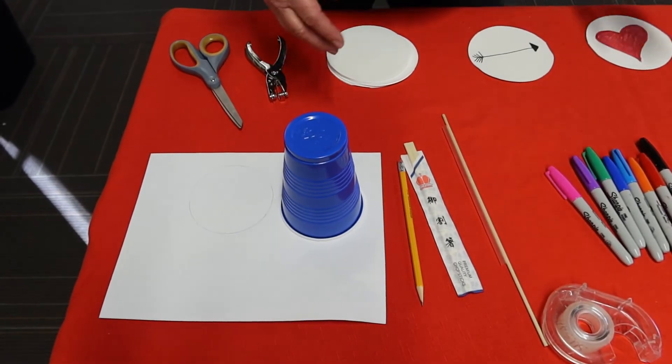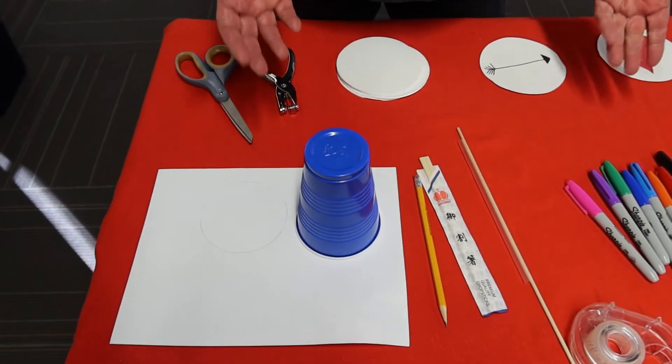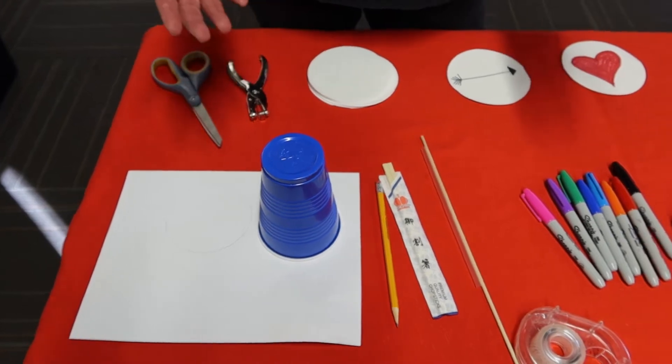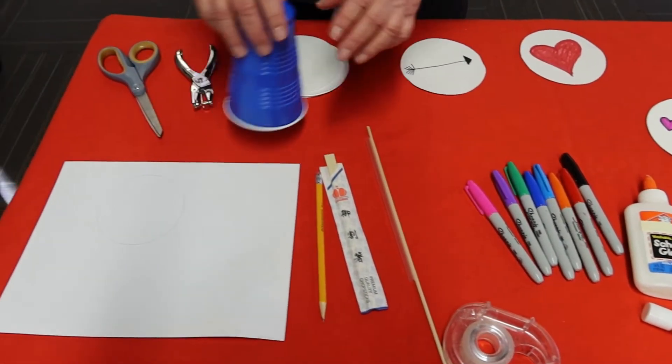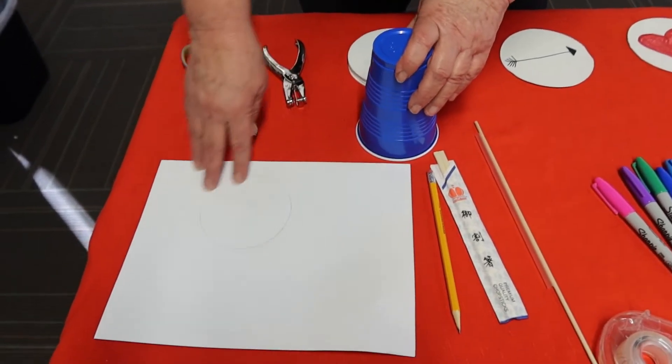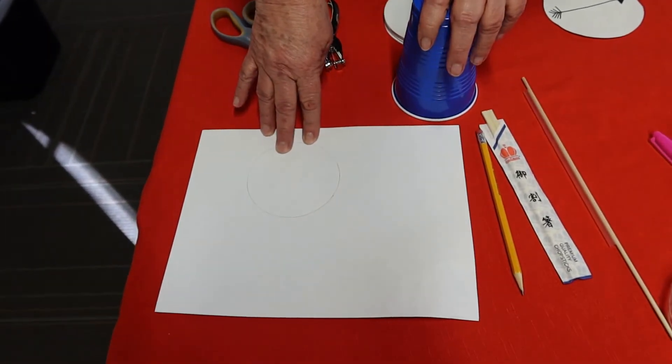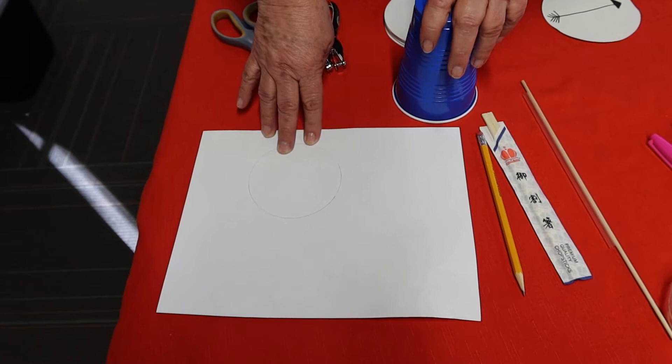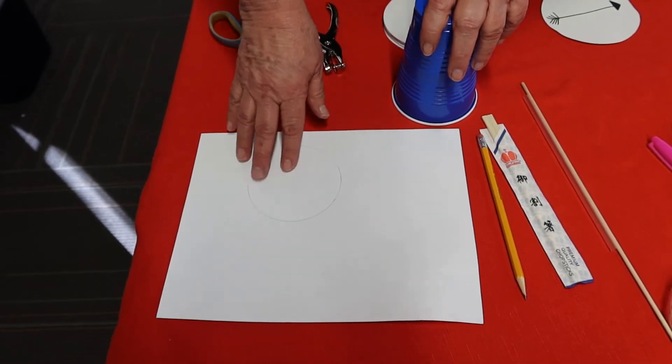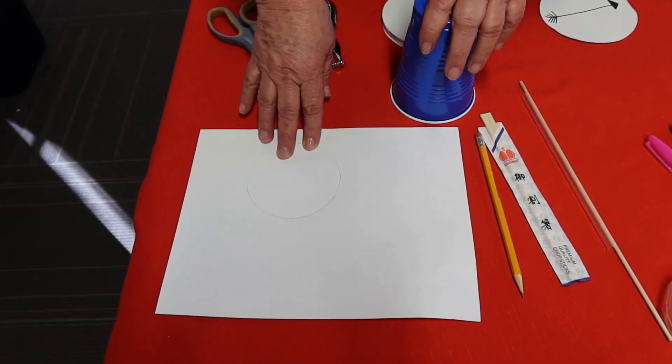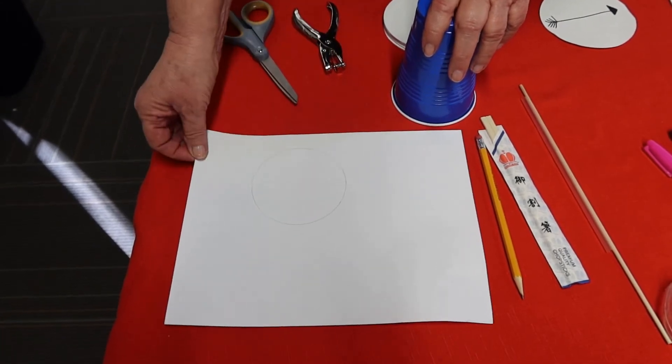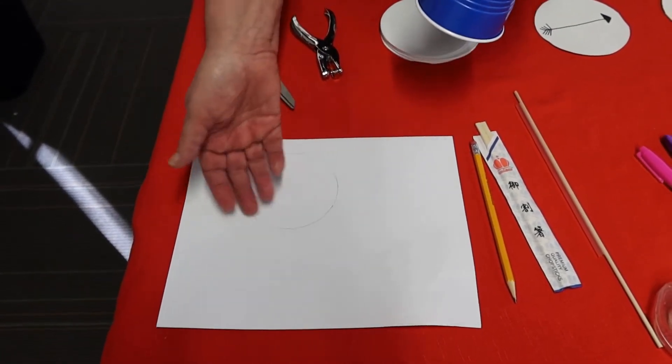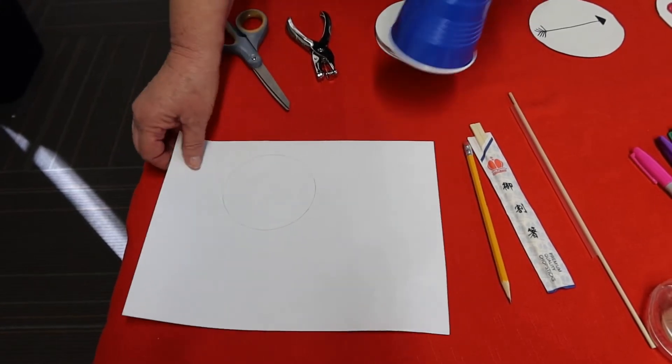These are the materials you'll need to make a thaumatrope. First, you'll need a piece of paper. Really any kind of paper will work, but it would be best if you had heavy cardstock paper. Construction paper or even copy paper is fine.